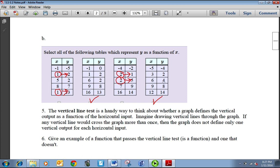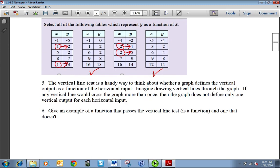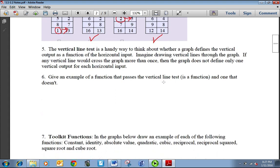The vertical line test is a handy way to think about whether a graph defines the vertical output as a function of the horizontal input. Imagine drawing vertical lines through the graph. If any vertical line would cross the graph more than once, then the graph does not define only one vertical output for each horizontal input.